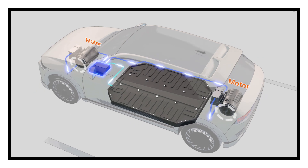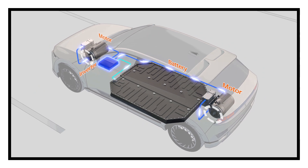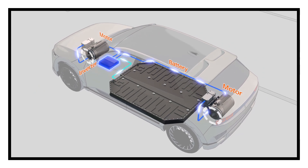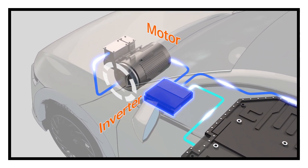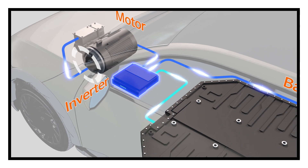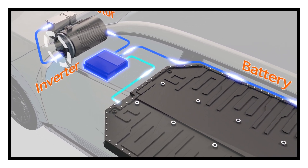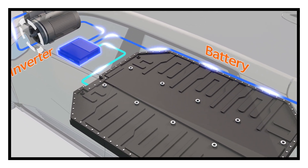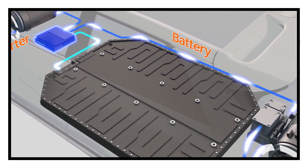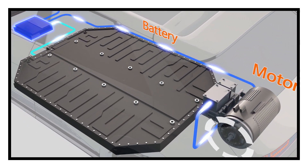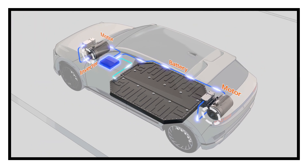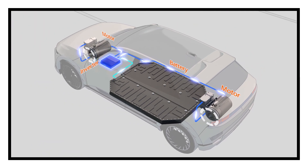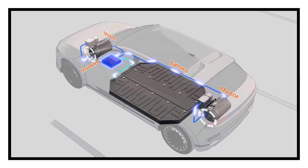The batteries on the electric vehicle supply the electric power to the inverter power semiconductor first. The power semiconductor converts the DC voltage from the batteries to AC voltage to rotate the electric motors.